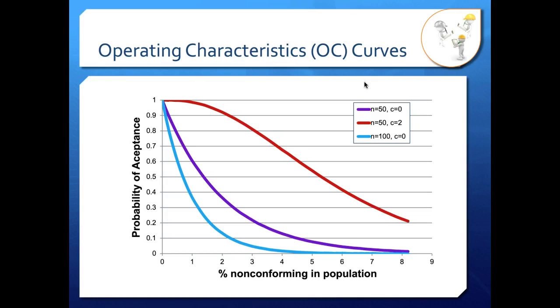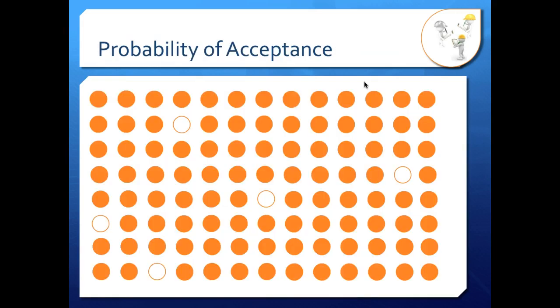Let's take a look at what that actually looks like in a particular sample. When we think about our sample, we're thinking about, okay, is this sample good or not? And that relates to what's called the probability of acceptance, which is how likely are you to accept that sample?